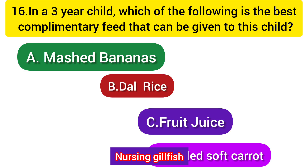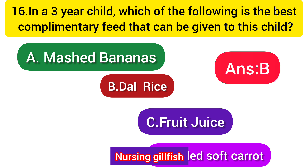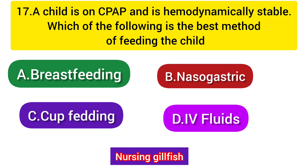Next question: For a three-year-old child, which of the following is the best complementary feed? Option A: Mashed banana, Option B: Dal rice, Option C: Fruit juice, Option D: Boiled soft carrot. Fruit juice, mashed banana, and boiled soft carrot are typically given to infants. For a three-year-old child, the correct complementary food is Option B - Dal rice.